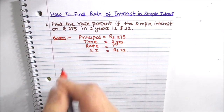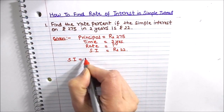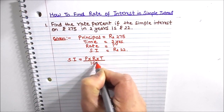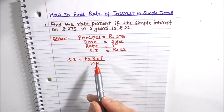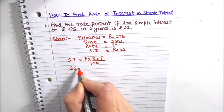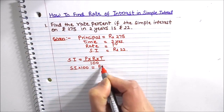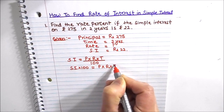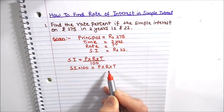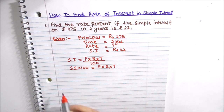Now we will write the formula for simple interest, which is: Simple Interest = Principal × Rate × Time ÷ 100. From this formula we are going to derive the formula for rate of interest. By cross multiplication we get: Simple Interest × 100 = Principal × Rate × Time. Since we need to find rate of interest, we leave R on the right hand side and shift all other variables to the left.